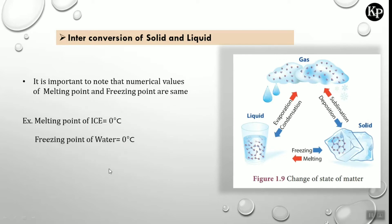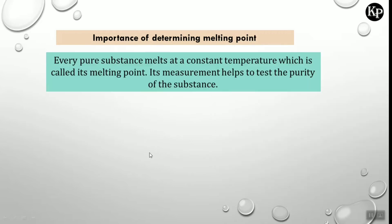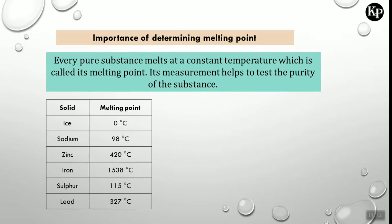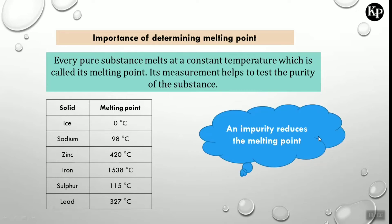The constant temperature at which a liquid changes into solid by giving out heat is called the freezing point. It is important to note that the numerical values of melting point and freezing point are the same — for example, the melting point of ice is 0°C and the freezing point of water is 0°C. Every pure substance melts at a constant temperature, and this measurement helps to test the purity of a substance. An impurity reduces the melting point.